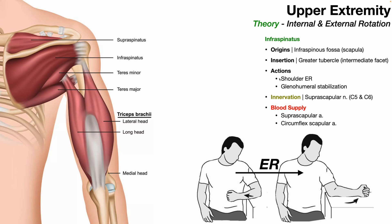The actions of the infraspinatus are glenohumeral stabilization and shoulder external rotation — the reverse of internal rotation, rotating the arm outward at the shoulder joint. The infraspinatus is innervated by the suprascapular nerve — the same nerve that innervates the supraspinatus — with nerve root contributions from C5 and C6. Its blood supply is via the suprascapular and circumflex scapular arteries.